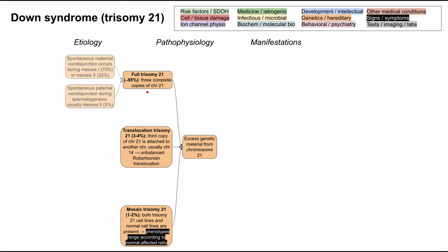There's a specific way this happens called non-disjunction, which is when the chromosomes fail to separate from their centers during meiosis. Meiosis is the process of the cell cycle that germ cells go through, whereas mitosis is the process that all other somatic cells go through. This happens more frequently on the maternal side during meiosis 1 at a chance of 70%, less frequently on the maternal side during meiosis 2, and even less frequently on the paternal side during meiosis 2. All of these are more likely with advanced parental age.